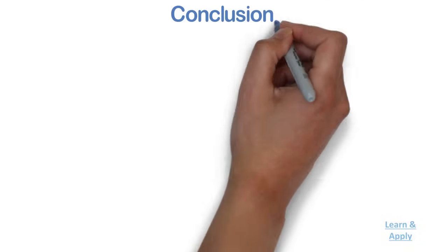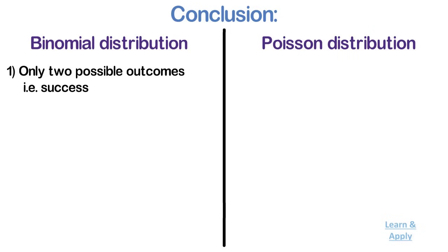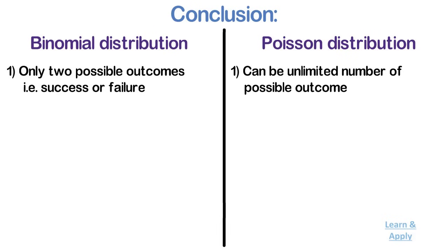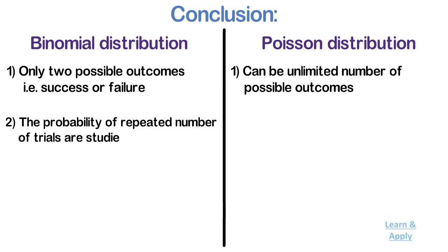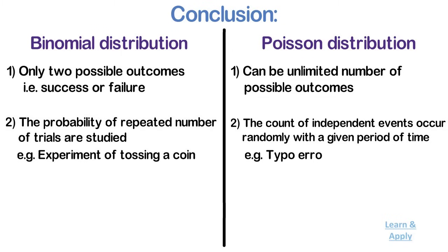Conclusion: both binomial distribution and Poisson distribution are used for discrete variables, but there are some differences. 1. In binomial distribution there are only two possible outcomes — success or failure — whereas in Poisson distribution there can be an unlimited number of possible outcomes. 2. Binomial distribution is one in which the probability of repeated number of trials are studied, whereas Poisson distribution gives the count of independent events occurring randomly within a given period of time — for example, tossing a coin versus typo errors in a large book.